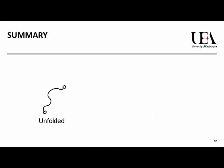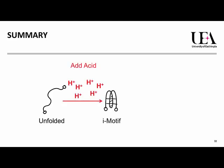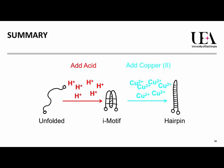In summary, we can take a piece of DNA which is unfolded. We already knew we could fold it using acid to make the special i-motif structure. But now we know you can also change its shape further into a hairpin using copper 2 cations. Each of these stages is reversible, so there are now two switches instead of one, and this expands the possibilities for applications in nanotechnology.